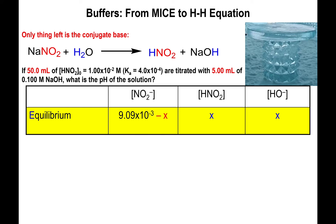Setting up the expression, we have x² divided by 9.09 × 10⁻³ minus x. Here is a very common mistake students make: at the equivalence point you are no longer dealing with the acid reacting with water — you are dealing with the conjugate base reacting with water. So the equilibrium expression is not Ka; it is actually Kb.